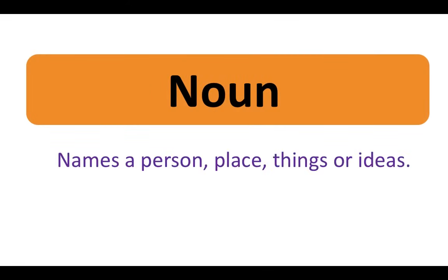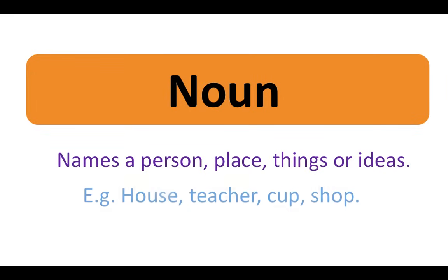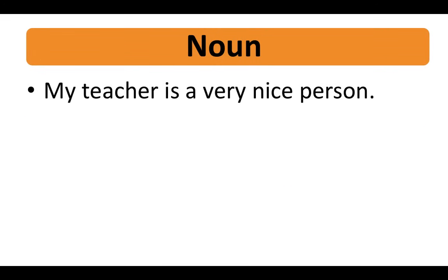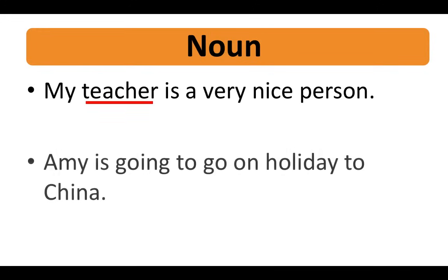A noun names a person, place, thing, or idea. For example: house, teacher, cup, shop. My teacher is a very nice person — the noun in this sentence is 'teacher.' Amy is going to go on holiday to China — there are two nouns in this sentence: 'Amy,' because it's a person's name, and 'China,' because it's the name of a place.